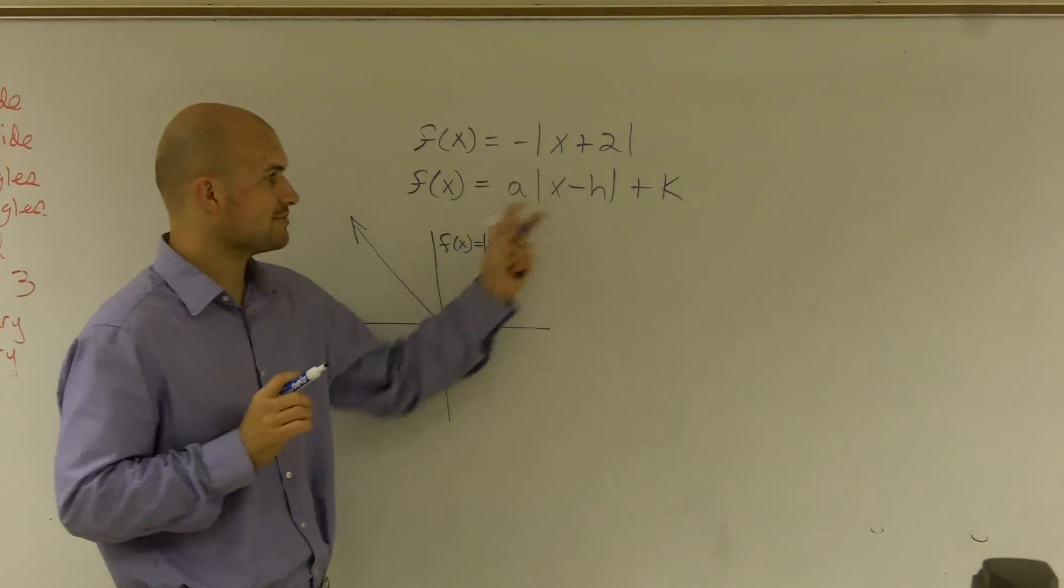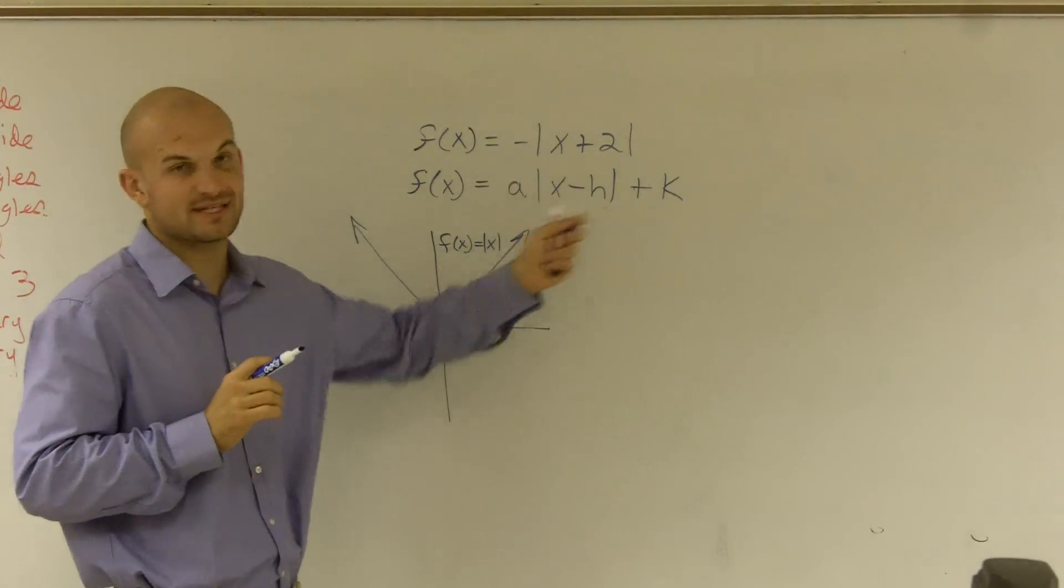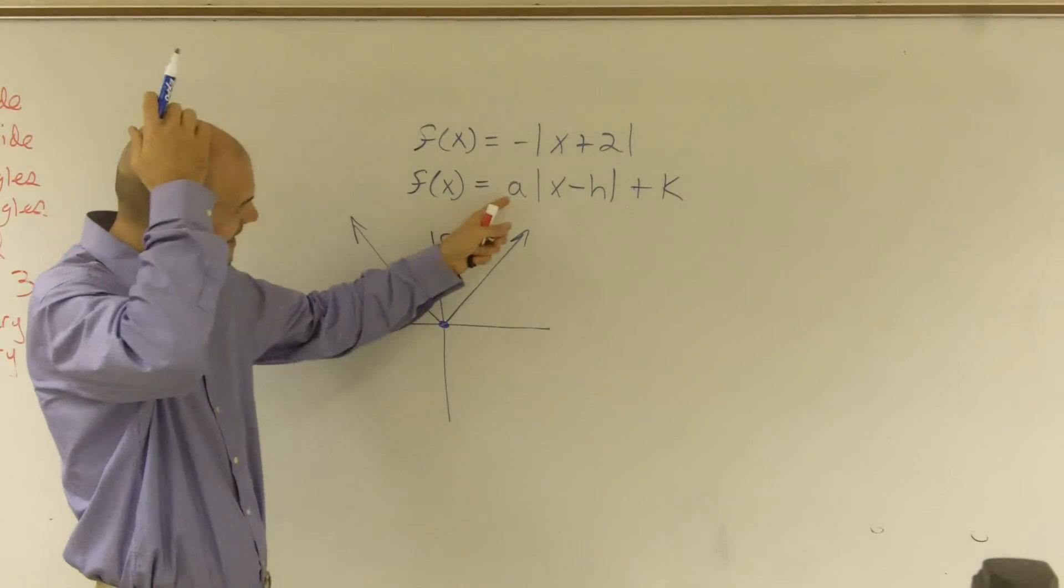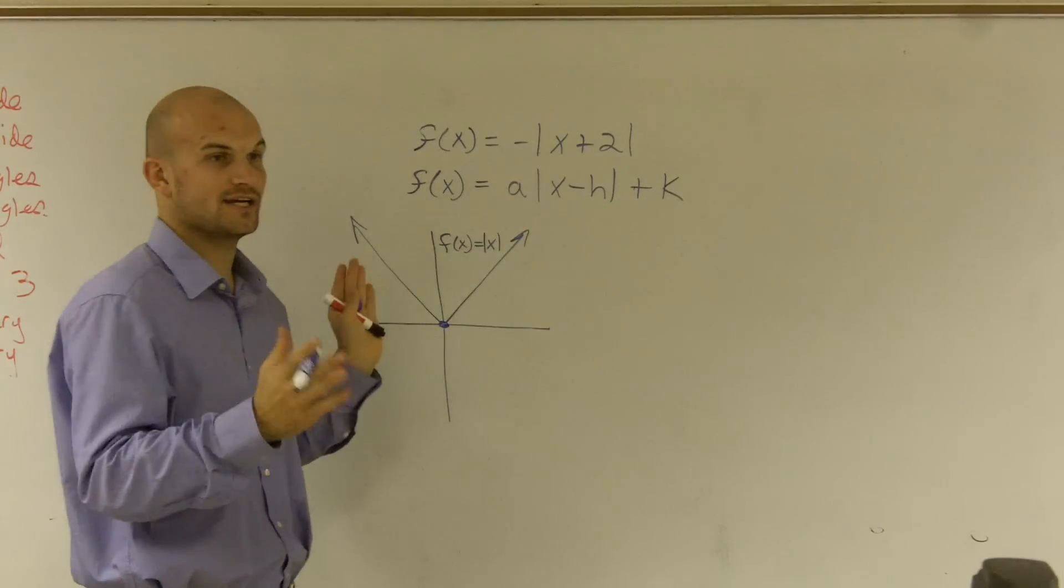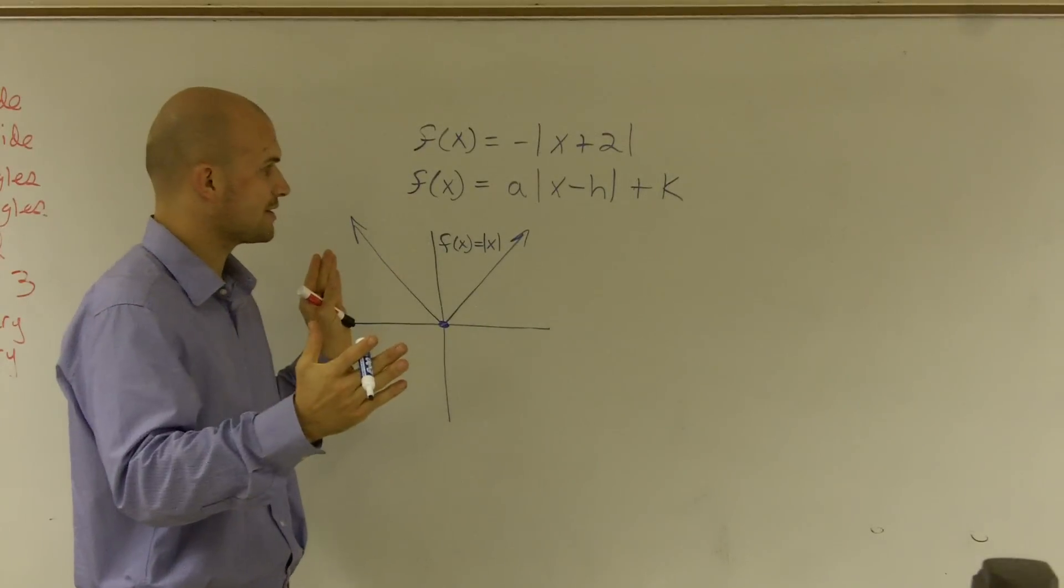The next thing we need to know is what are our transformations going to do if I had numbers where these variables are. Our 'a' is going to tell you if it's going to reflect about the x or y axis, and also it's going to tell you if it's stretching or compressing the graph.